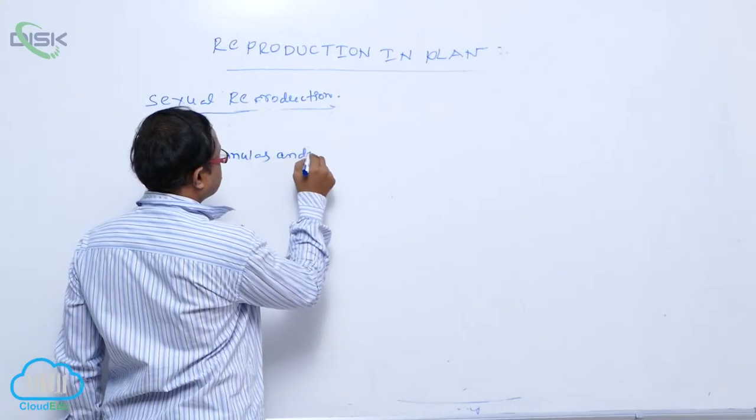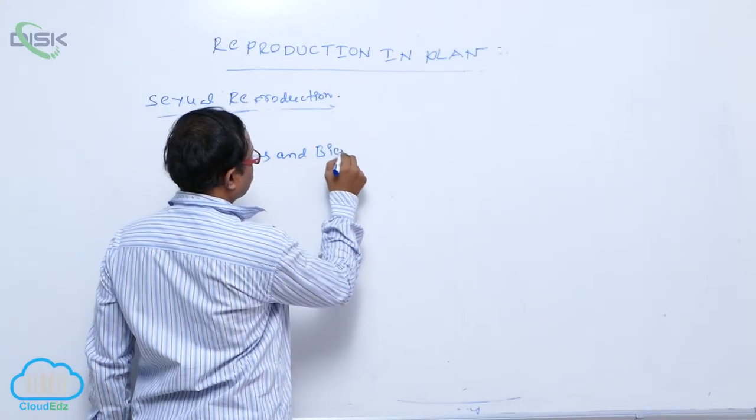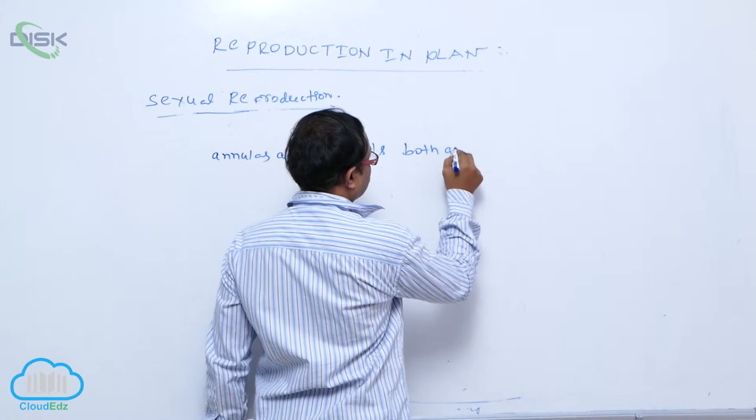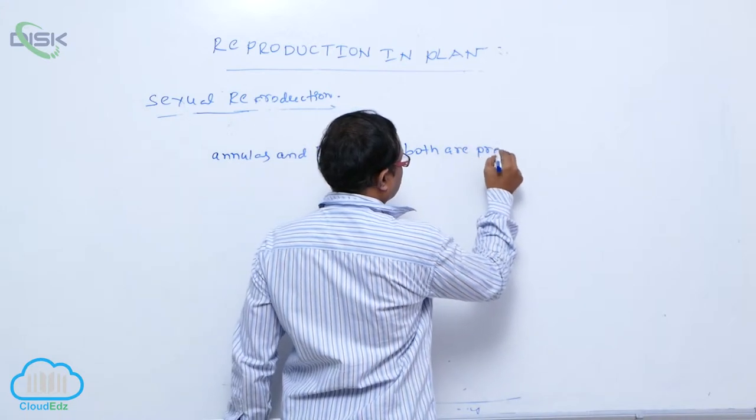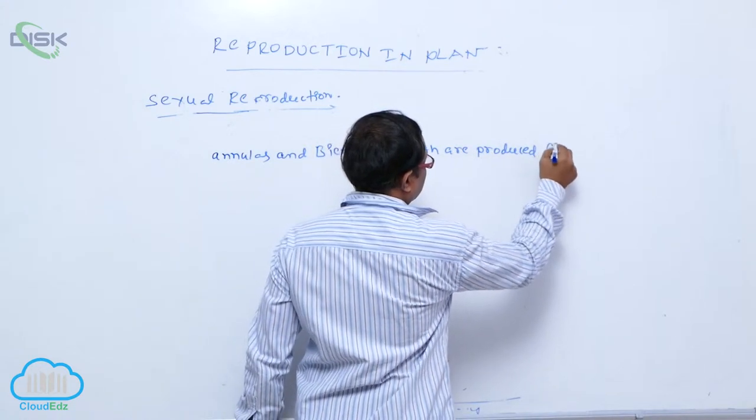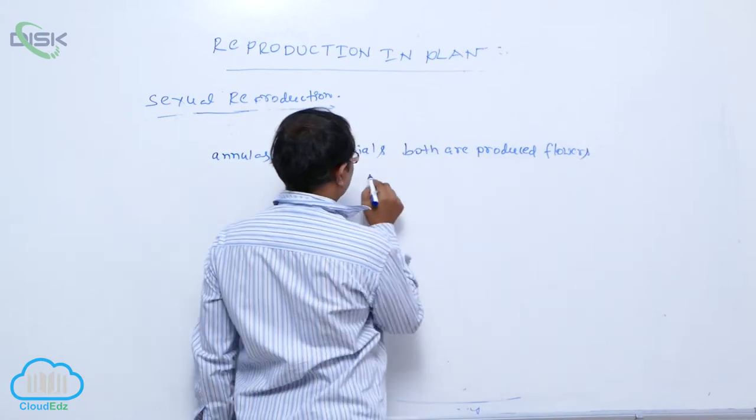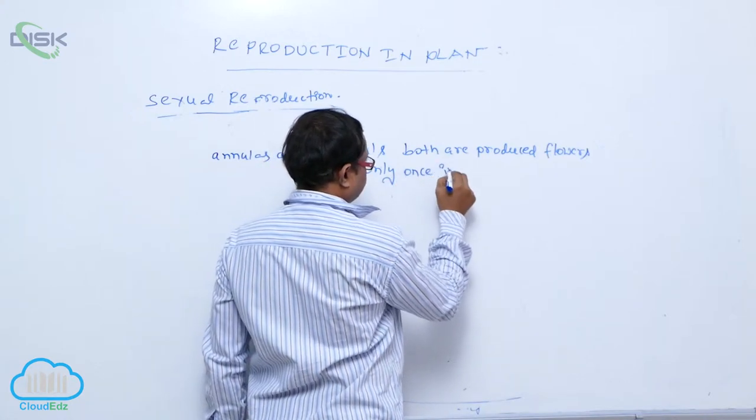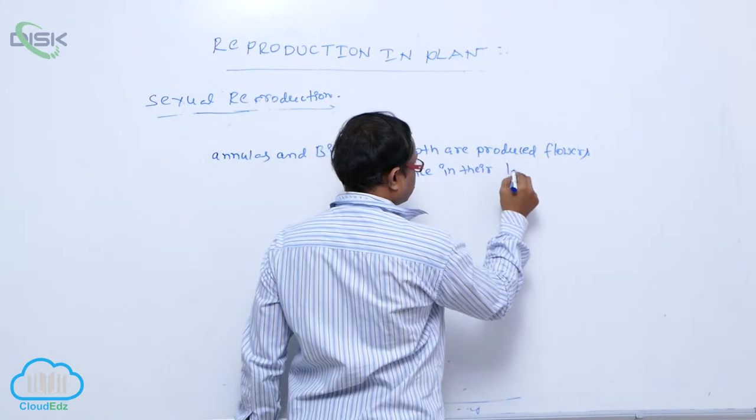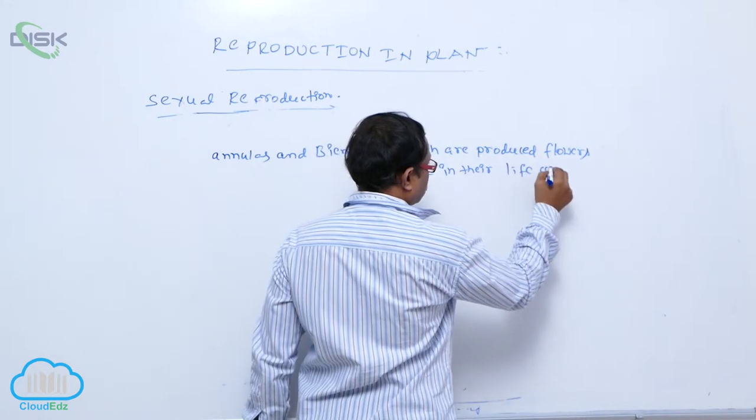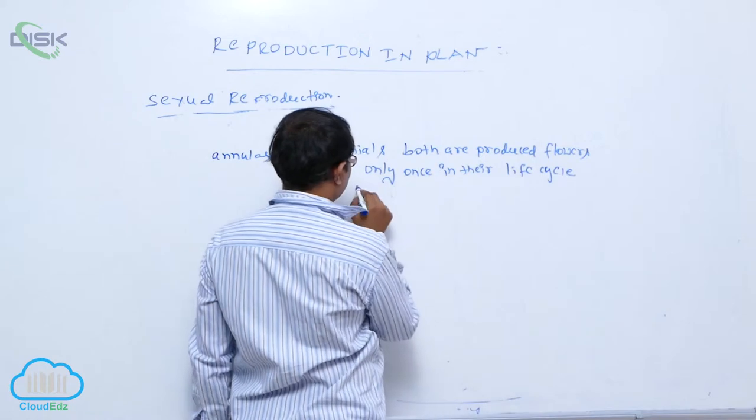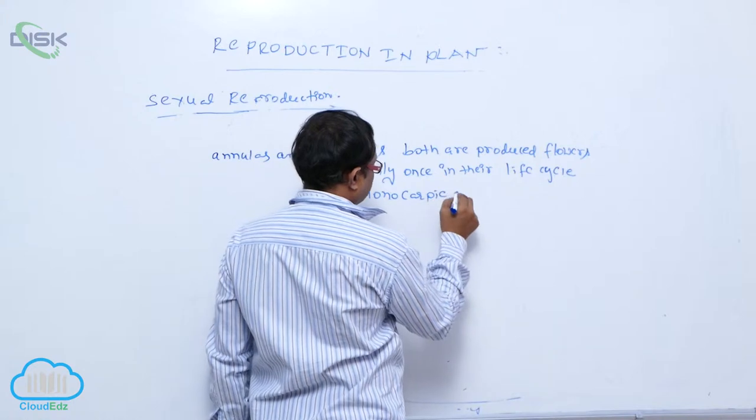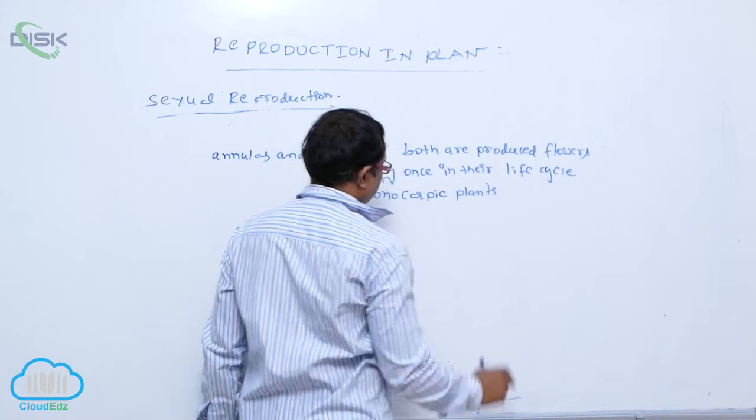And biennials. So both produce flowers only once in their life cycle. They are known as monocarpic plants.